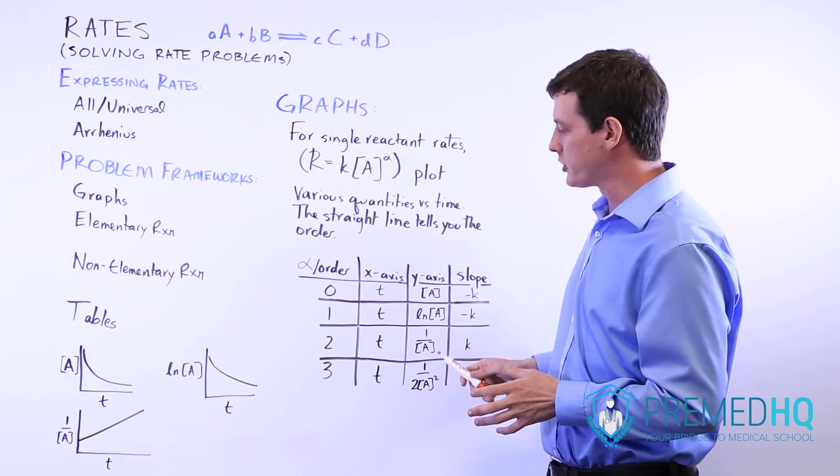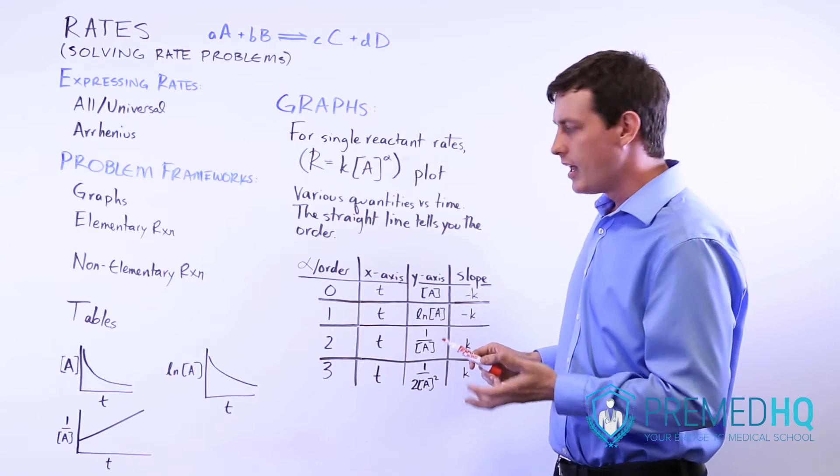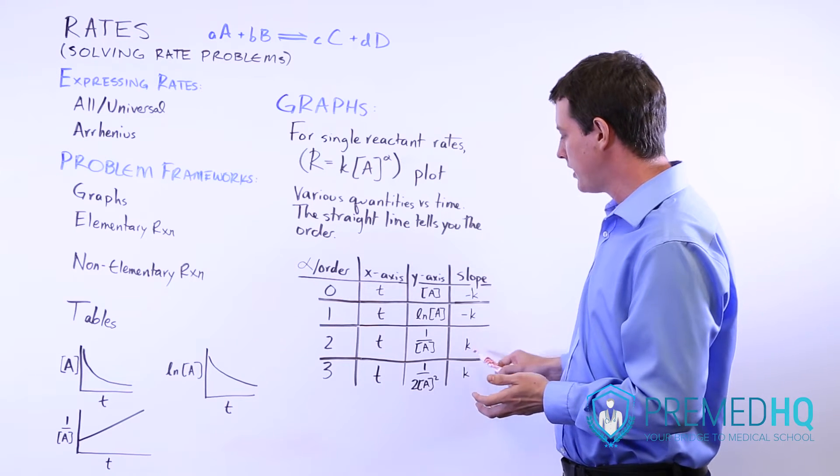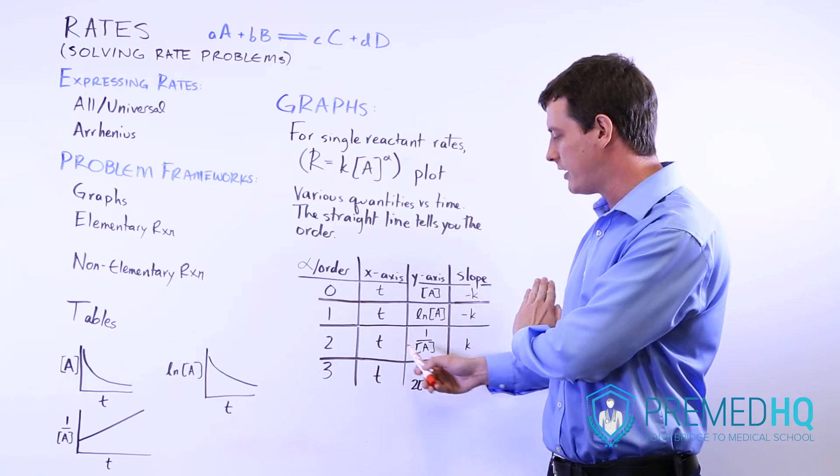For a second order reaction, you'll be plotting 1 over A versus time. And what you'll notice is that there will actually be an upward slope with the slope of k. And that's what will be the straight line.